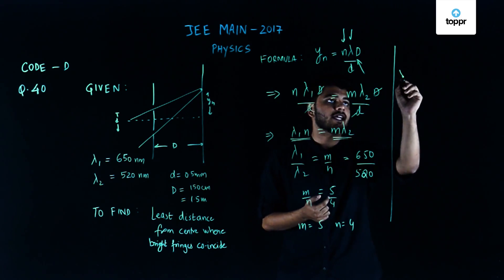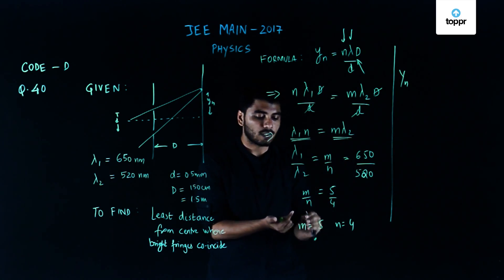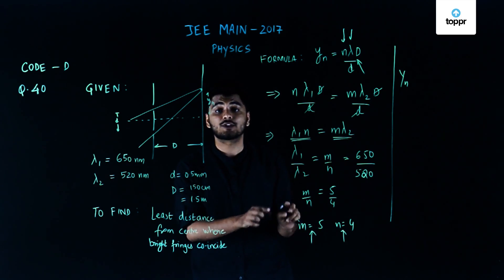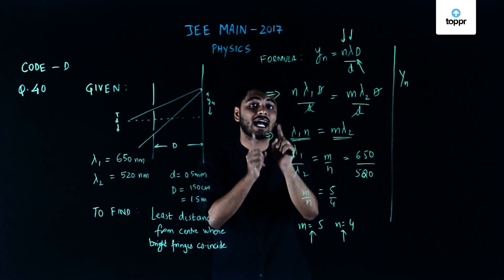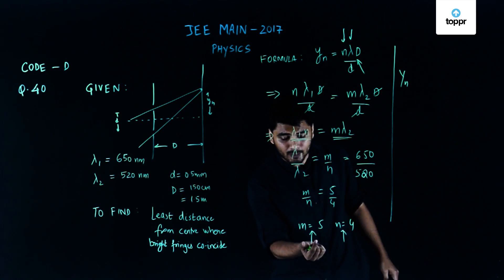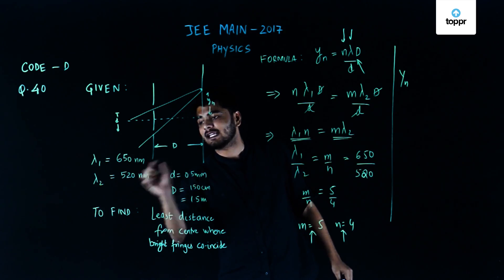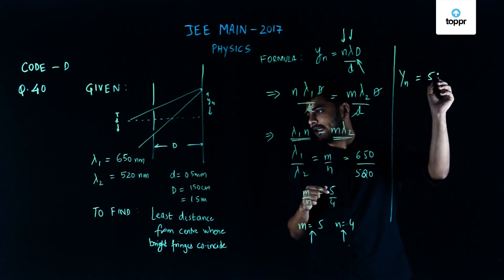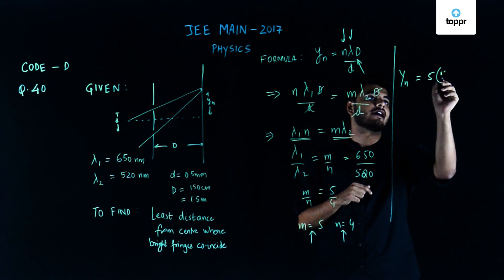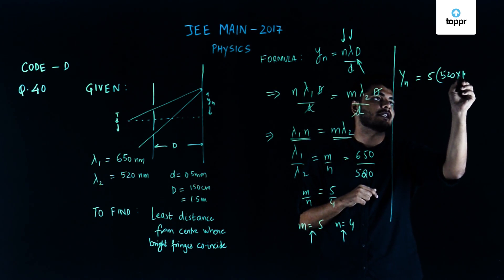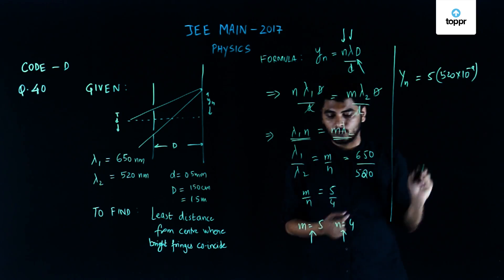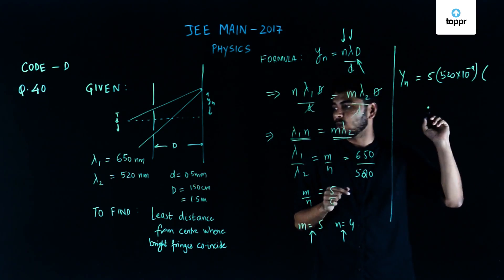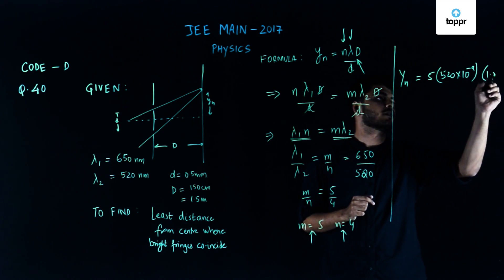In order to find yn I can use either one. I can use m equals 5 or n equals 4, but I need to take the proper wavelength associated with that maximum. m equals 5 corresponds to lambda 2, so I'll take m equals 5, lambda equals 520 nanometers, which is 520 times 10 to the power minus 9 meters. Please take care of the units, times capital D, 1.5 meters, by small d which is...